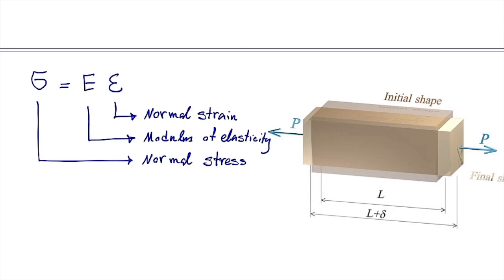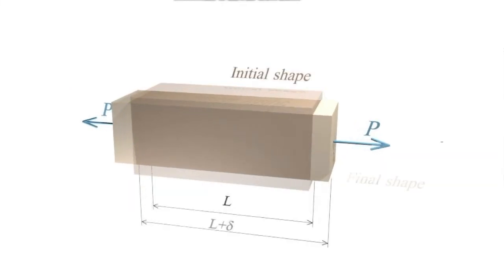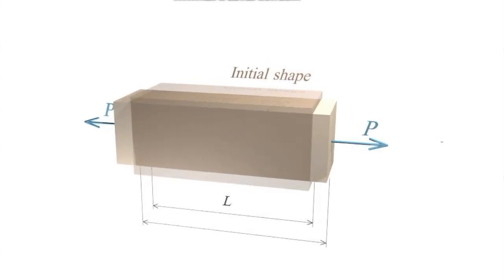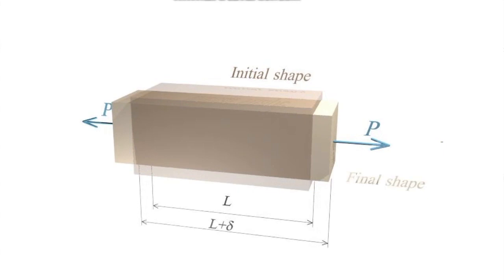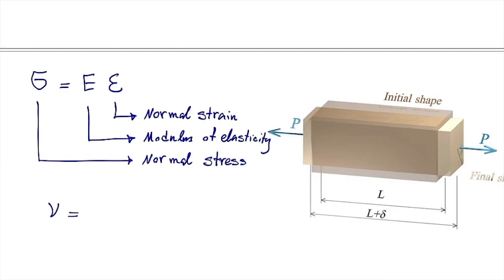Also, there was another property that we called Poisson's effect. As you can see, the element is stretching in the longitudinal direction, but also in the lateral direction it is getting shorter. That property was described by a constant number which is Poisson's ratio, and that is simply lateral strain divided by longitudinal strain. Longitudinal strain is strain in the direction of the applied force — in this case, horizontal. Lateral strain is any strain perpendicular to that, like the vertical direction or the direction perpendicular to the plane. Because one of them is negative and the other is positive, and we want a positive Poisson's ratio, we put a negative sign before this equation.